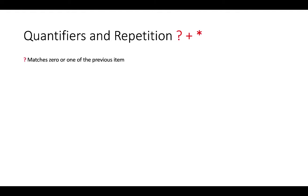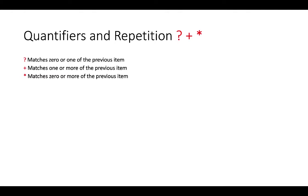Question mark matches zero or one of the previous item. Plus sign matches one or more of the previous item. Star matches zero or more of the previous item. For example, '31?' matches '3' and '31' because the previous item to the question mark is '1'.